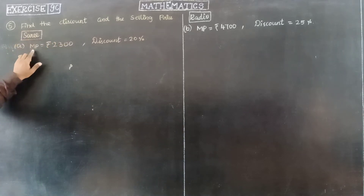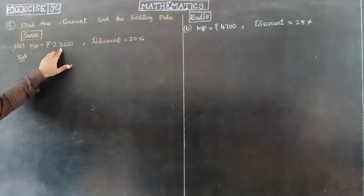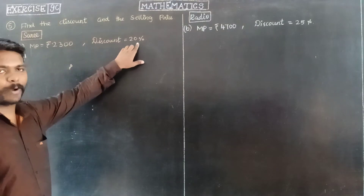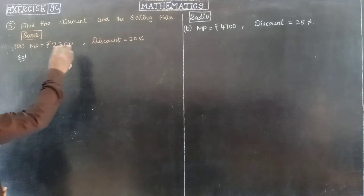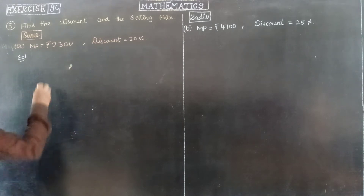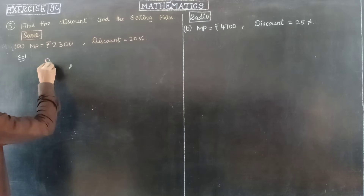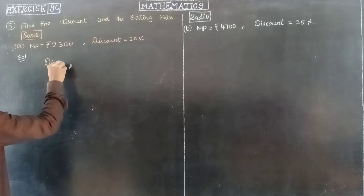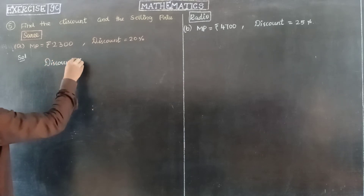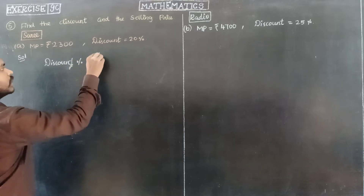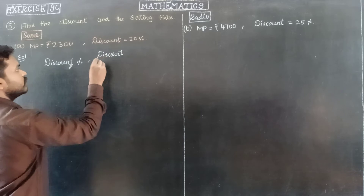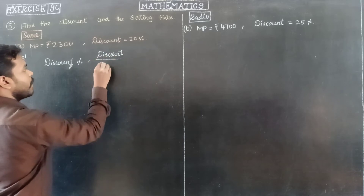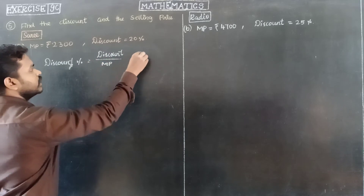Question A. Sari — the marked price of the sari is ₹2300 and the discount is 20%. We need to find the discount and the selling price.